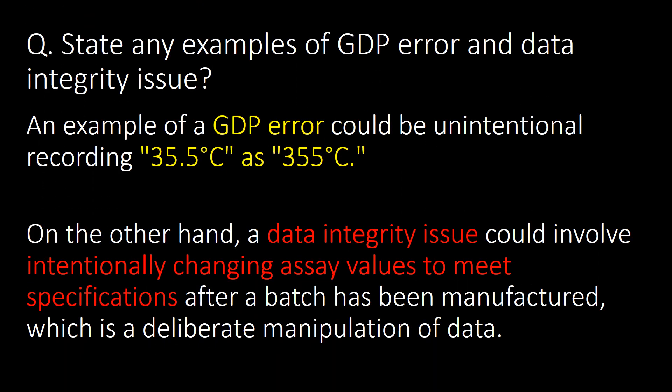State an example of a GDP error and a data integrity issue. An example of a GDP error could be unintentionally recording 35.5 degrees Celsius as 355 degrees Celsius — a GDP error in recording the decimal point. On the other hand, a data integrity issue could involve intentionally changing assay values to meet specifications after a batch has been manufactured, which is a deliberate manipulation of data.